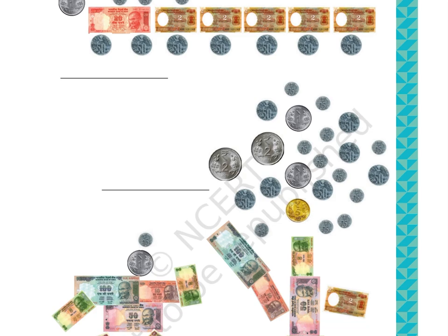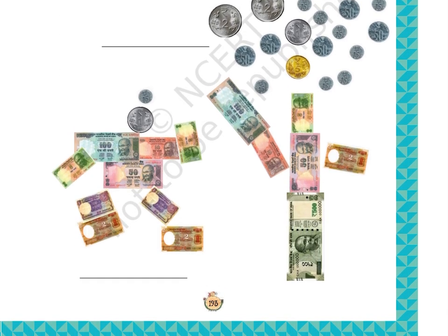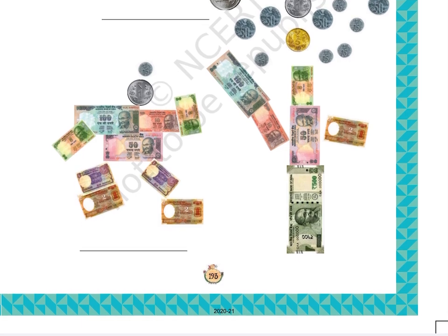Part E: The given picture shows 1 coin of 1 rupee, 1 coin of 25 paise, 2 one-rupee notes, 2 two-rupee notes, 2 five-rupees notes, 1 ten-rupees note, 1 fifty-rupees note, and 1 hundred-rupees note. Blank space is given below to write the answer.